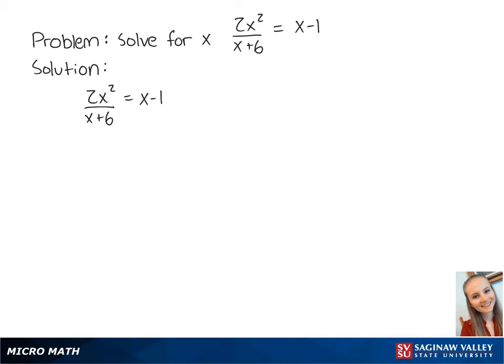Let's solve for x in the equation 2x² over x+6 equals x-1. To eliminate the fraction on the left side, we multiply both sides by the denominator x+6, which cancels out on the left side.